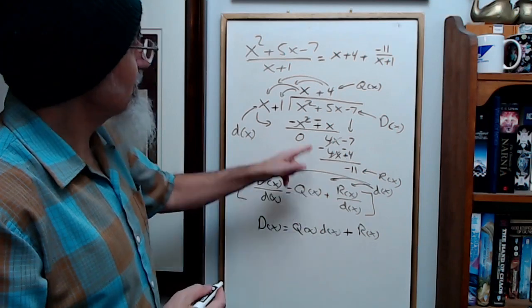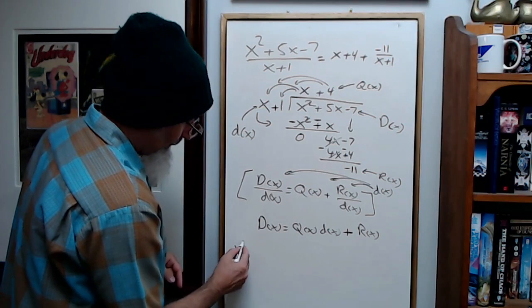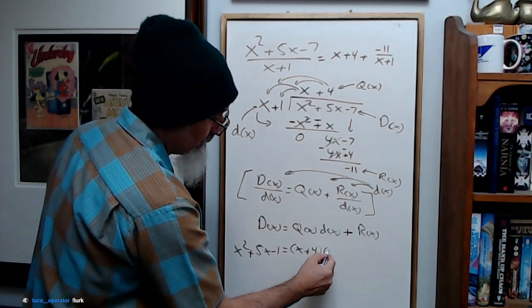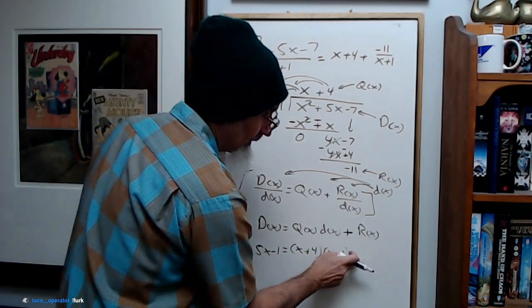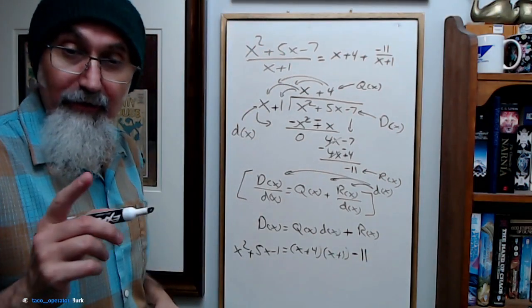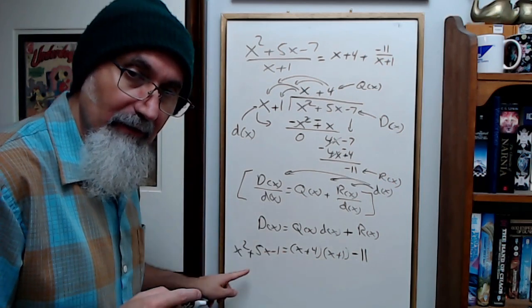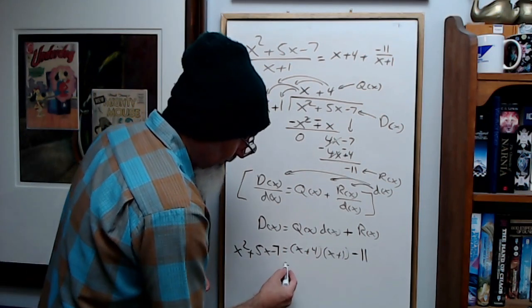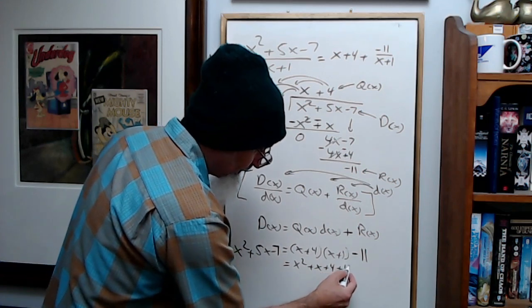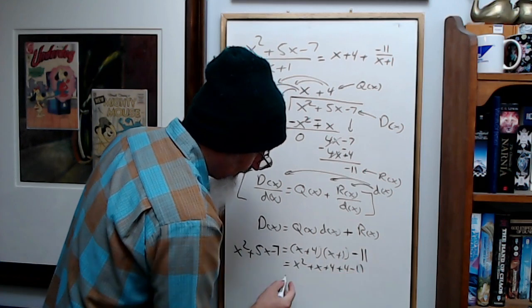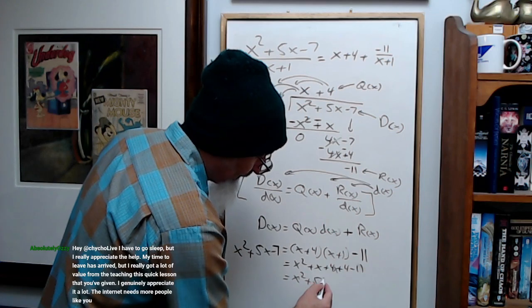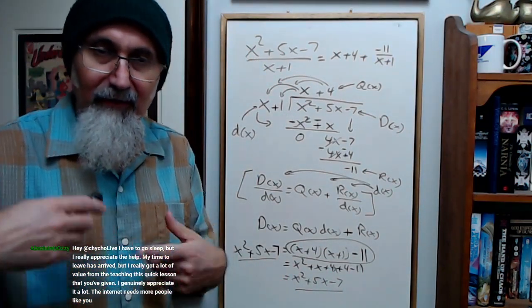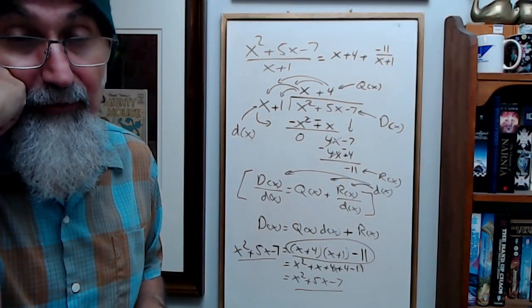If we express, use this to express this, then this becomes x squared plus 5x minus 7 is equal to the quotient, which is x plus 4 times the divisor, which is x plus 1, minus 11. So if you foil this baby out and subtracted 11, you get this. We can test it. Foil it out. You get x squared plus x plus 4x plus 4 minus 11. Combine your like terms. You get x squared plus 5x minus 7. That is the same as that. And this is one way of writing it. So this division comes into play in higher level mathematics. It is quite important.